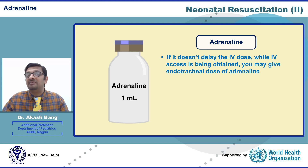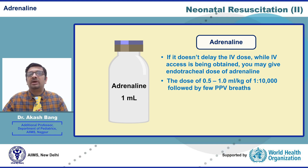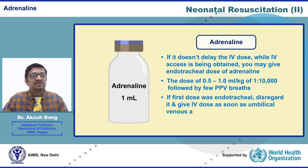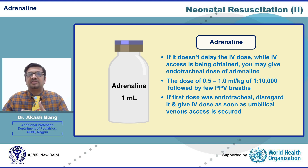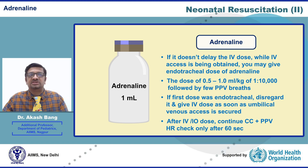Only if it doesn't delay the IV dose — while IV access is being obtained — you may give an endotracheal dose of adrenaline. The endotracheal dose is 0.5 to 1 ml per kg of 1-in-10,000 solution, followed by a few PPV breaths. However, if such an endotracheal dose is given, you must disregard it and give an IV dose as soon as umbilical venous access is secured and heart rate is found to be below 60.